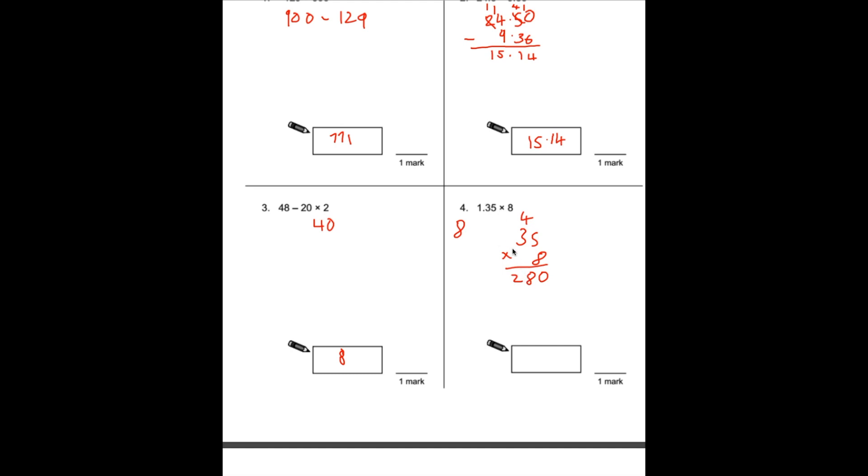So I will have 280 in this case, but because it was a decimal, I know it's going to be 2.80. So I'm going to add 8 and 2.80 together, which would give me 10.8 as my answer.